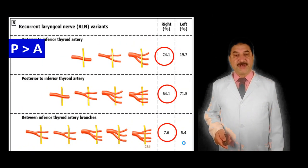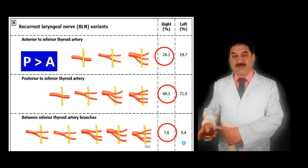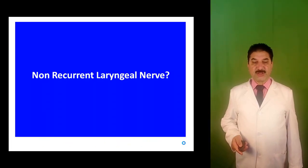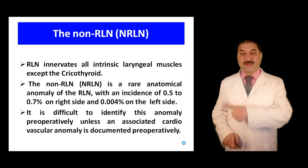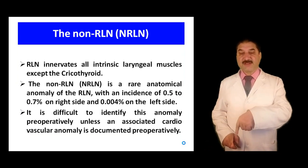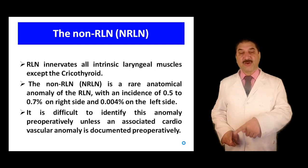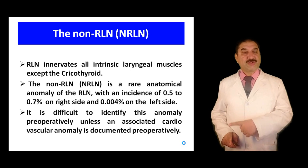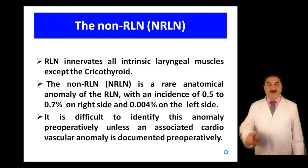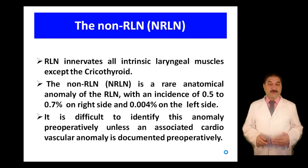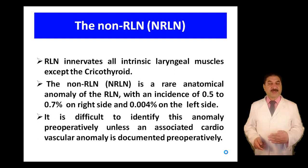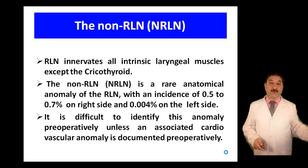The non-recurrent laryngeal nerve is a rare anatomical anomaly of the recurrent laryngeal nerve, with an incidence of 0.5 to 0.7% on the right side and 0.004% on the left side. It is difficult to identify this anomaly pre-operatively unless an associated cardiovascular anomaly is documented pre-operatively, which is why it confuses surgeons who don't have a pre-operative diagnosis of these cardiovascular anomalies.